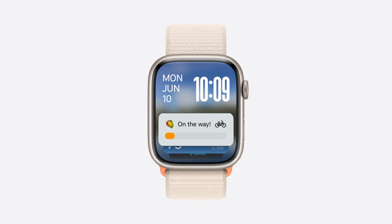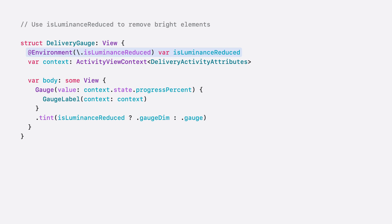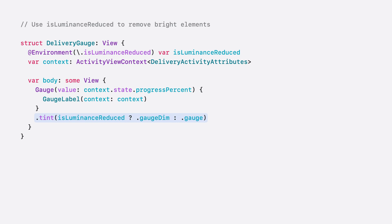Also, consider adjustments your activity view may need for always-on display. When the watch is in always-on mode, the system will automatically switch the color scheme to dark and set reduced luminance when someone puts their wrist down. If you have brightly colored views, use the Is Luminance Reduced environment value to remove bright elements or reduce their brightness. In my view, I'm using a different tint for the gauge when the luminance is reduced to reduce the brightness and preserve readability. If you want your live activity to have a light appearance, set the preferred color scheme to light — it will automatically use the dark appearance in always-on display with reduced luminance. Semantic colors like primary will automatically use an appropriate color for the color scheme. Now, my activity will look great and show the best information possible at all times.